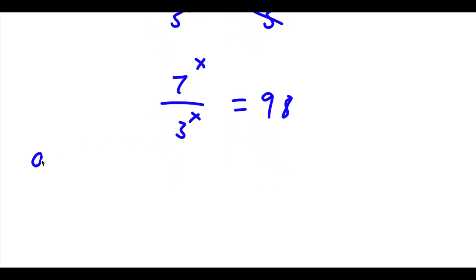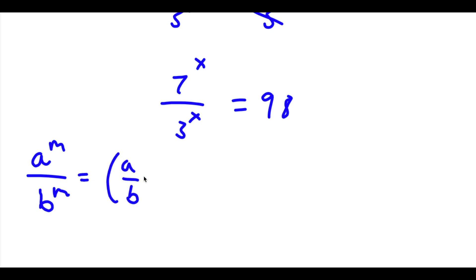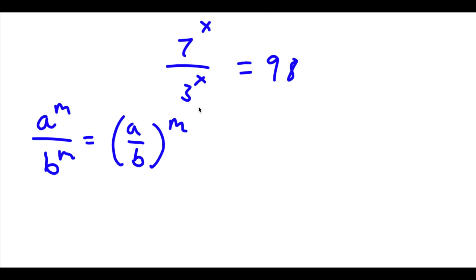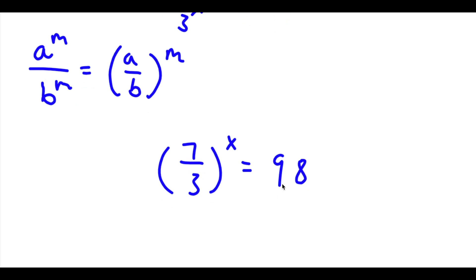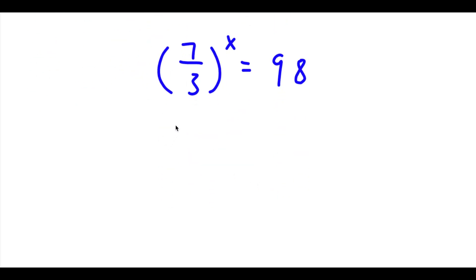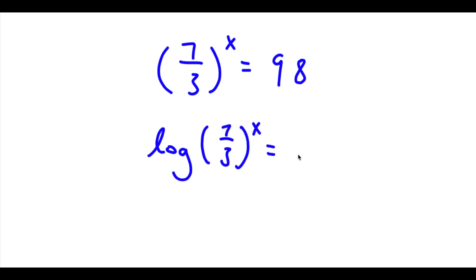Now if I have something in the form a to the power of m over b to the power of m, this is equal to a over b to the power of m. So in this case 7 to the power of x over 3 to the power of x equals 7 over 3 to the power of x, and this is equal to 98. Now I'm going to take the log on both sides, so now I have log of 7 over 3 to the power of x is equal to log 98.